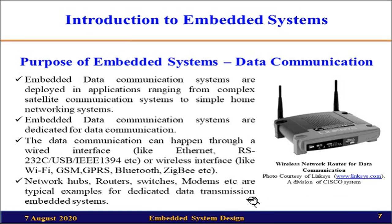The second purpose of embedded systems is data communication. Embedded data communication systems are deployed in applications ranging from complex satellite communication systems to simple home networking systems. They can use either a wired interface — such as Ethernet, RS-232, USB, or IEEE 1394 — or a wireless interface such as Wi-Fi, GSM, GPRS, Bluetooth, or Zigbee. Typical examples are network hubs, routers, switches, and modems. One such example is a wireless network router.